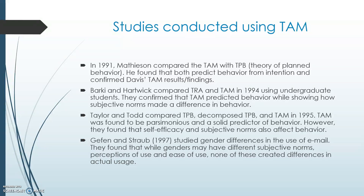In 1991, Matheson compared the Technology Acceptance Model with the Theory of Planned Behavior by asking students about their intent to use various spreadsheets to complete assignments and how important it was to students to have approval from employers, professors, or other students. Findings were that both models are reliable in predicting behavior from intention. It also fully supported Davis's previous findings and reflected that the Technology Acceptance Model was parsimonious.